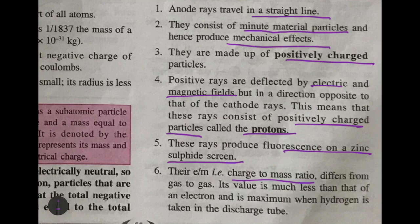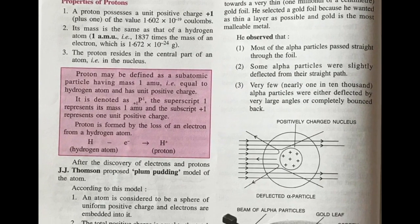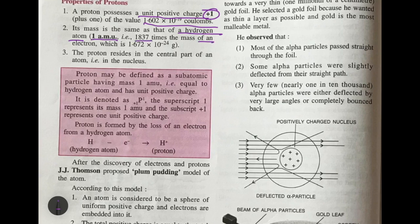Moving on to the properties of protons: a proton has a unit positive charge of +1, and the value is 1.602 × 10⁻¹⁹ coulombs. Its mass is the same as that of a hydrogen atom — that is 1 atomic mass unit, which is 1836 times the mass of an electron, equal to 1.672 × 10⁻²⁴ grams. Protons are found in the central part of the atom, known as the nucleus.